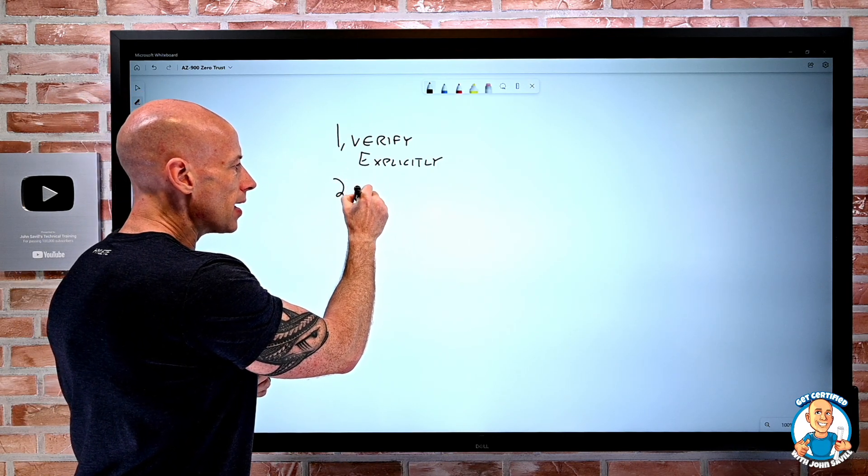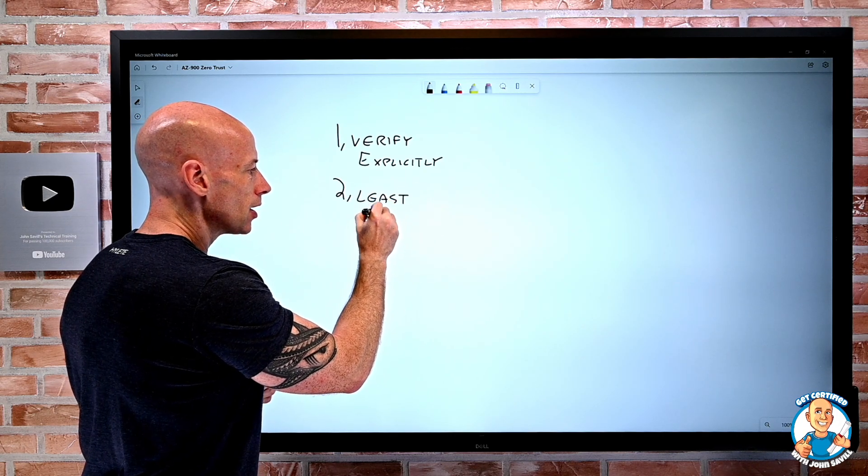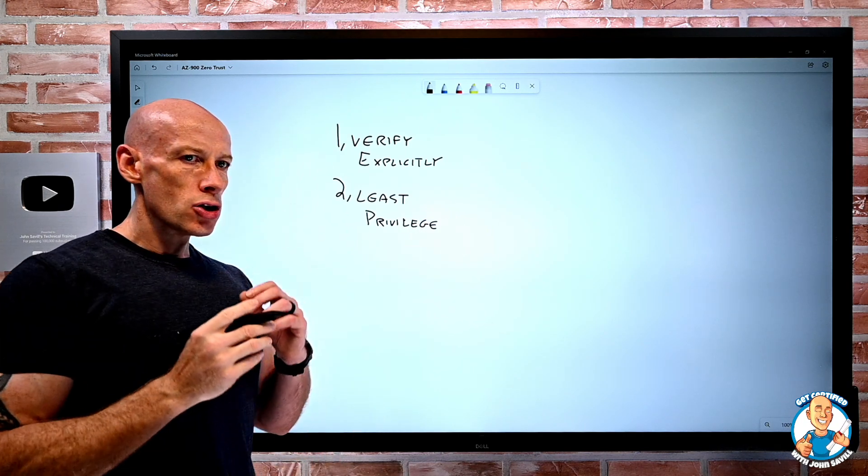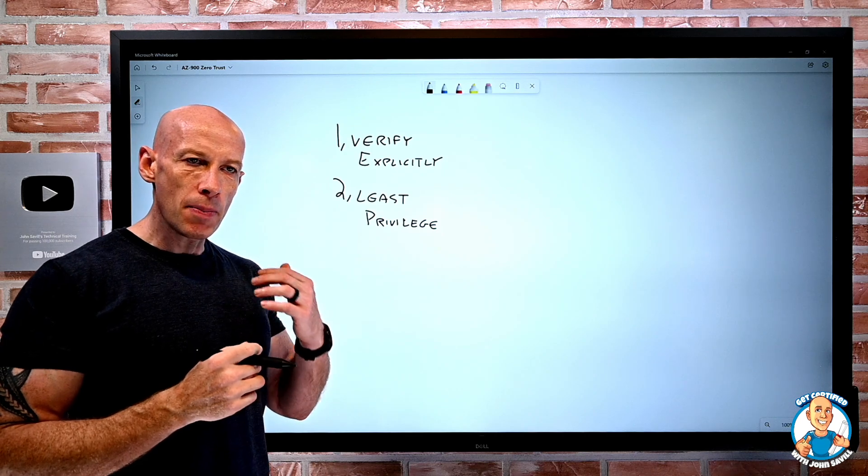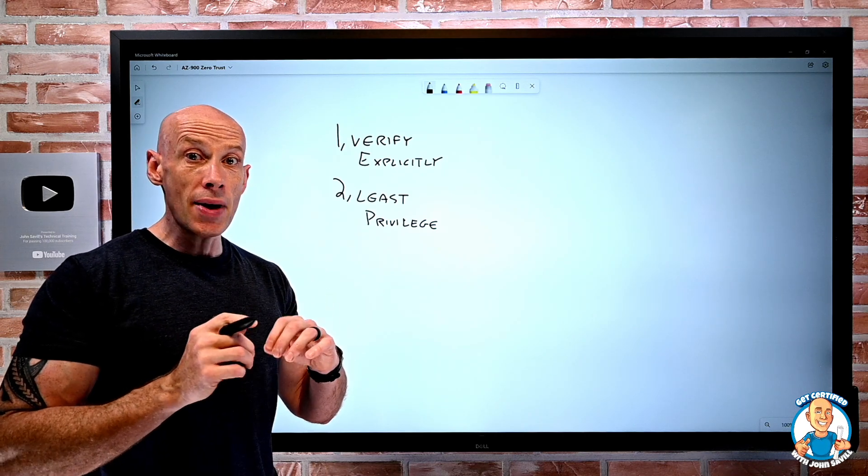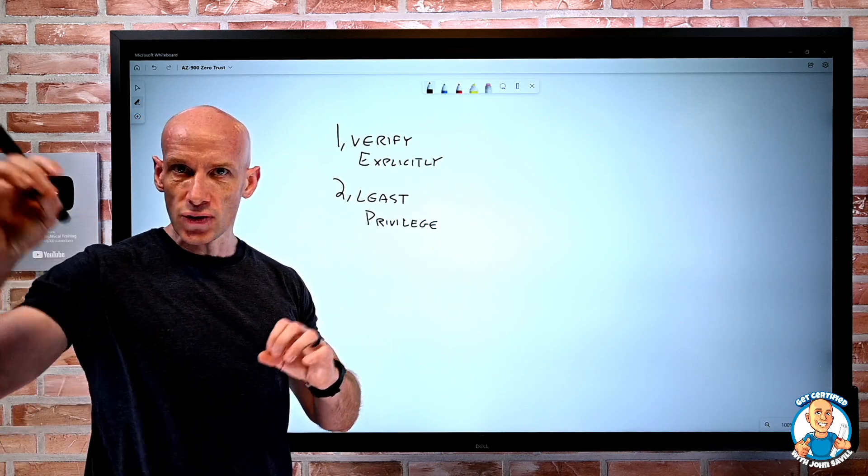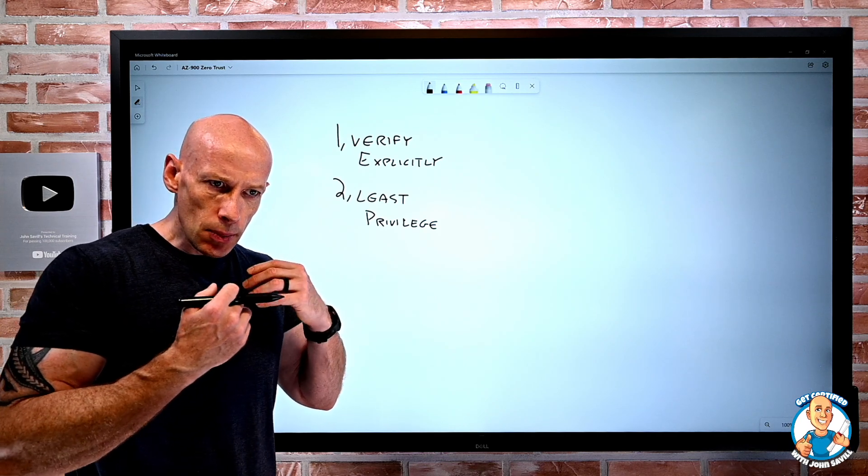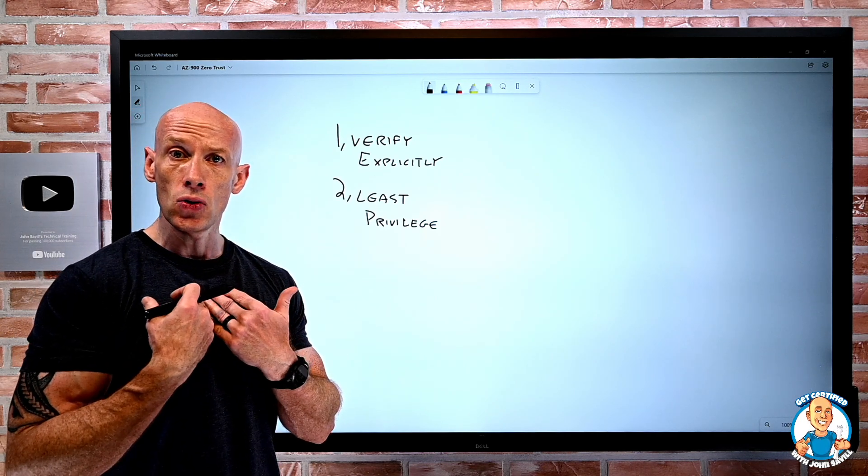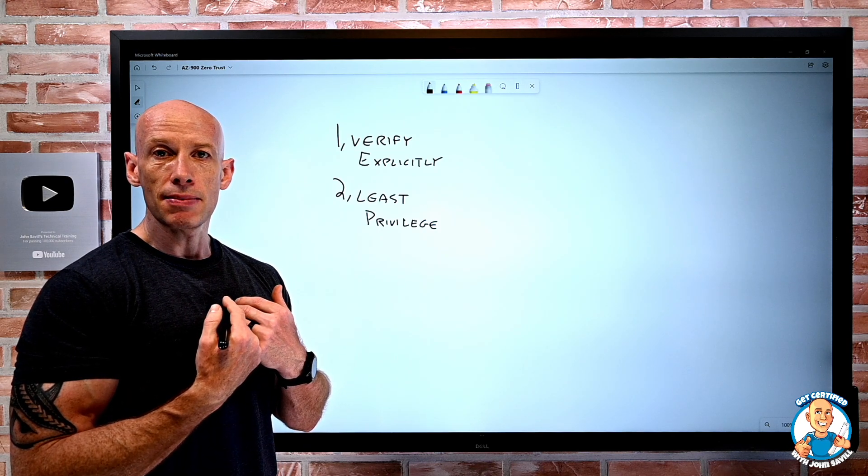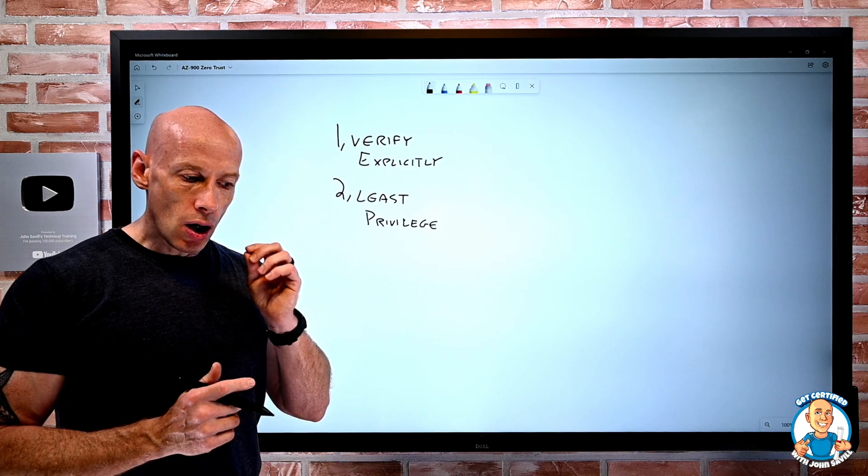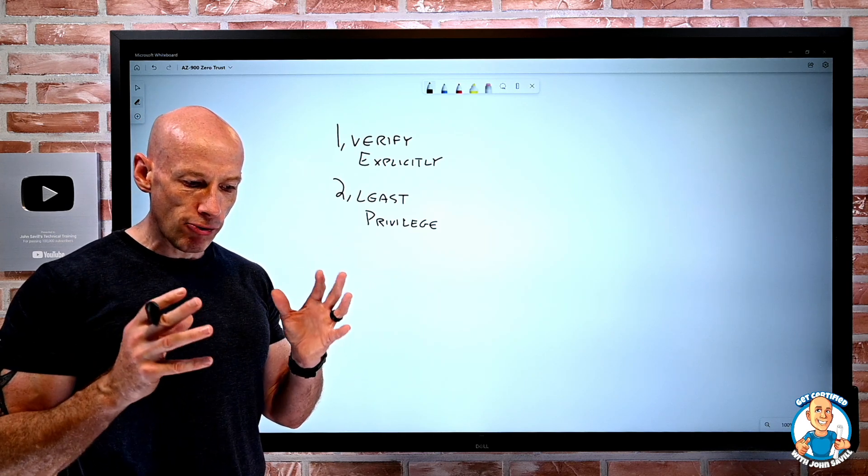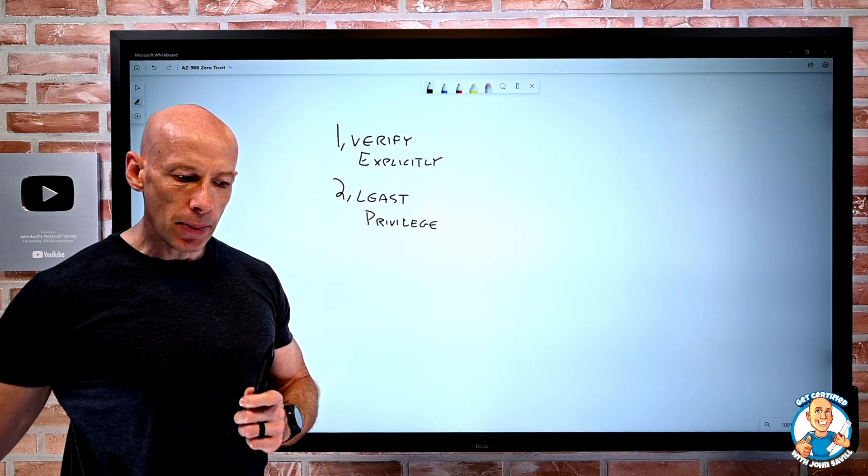We think about least privilege, just enough permission. I only have the permissions I need to do a particular job. So we make sure we have separate credentials, separate service principles for any different lines of work being done. We think about just in time. I don't have standing privileges. If I'm a user, I use technologies like privileged identity management to elevate up to a particular role only when I need it. We're going to use policy to look at the context of every request to implement the correct controls.